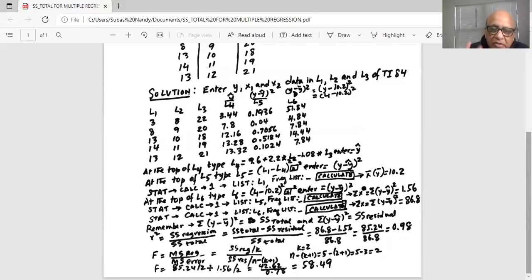Now k is 2 because there are two independent variables, n is 5, 5 data points. So 5 minus 2 plus 1, 5 minus 3 equals 2 is the degrees of freedom for the sum square error or sum square residual. So F is 85.24 divided by 2, which is 42.62, divided by sum square residual 1.56 divided by its degree of freedom, which is 2, is 0.78. So F test statistic works out as 58.49.